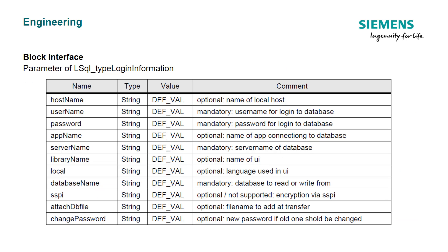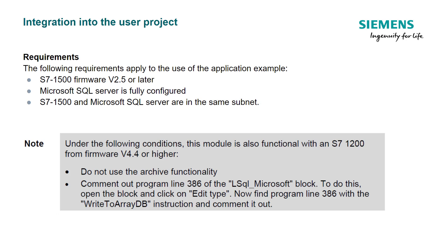A deeper dive into the block interface for the LSQL type login information. Here you will find these in the user data types. This user data type is used to connect the login information to the LSQL Microsoft function block. Please note the mandatory versus the optional requirements. These settings will come from the SQL Microsoft server that you are connecting to, and should be defined depending on that server.